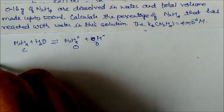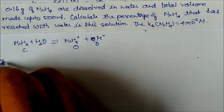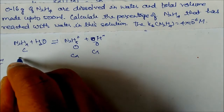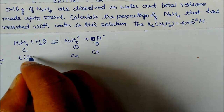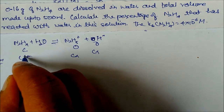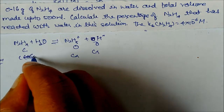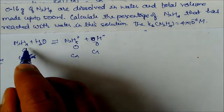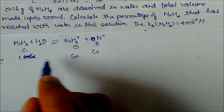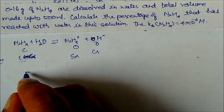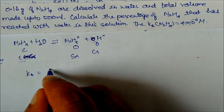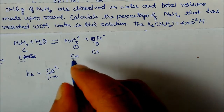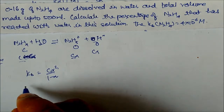At equilibrium the concentrations are C·α for N₂H₅⁺ and OH⁻, and C(1−α) for the remaining N₂H₄. So Kb = Cα²/(1−α). Similarly, since Kb is very very small, 1−α ≈ 1, so we can write Kb = C·α², giving α = √(Kb/C).